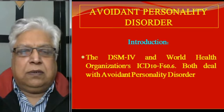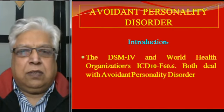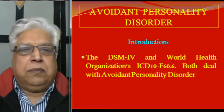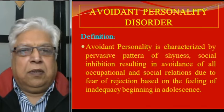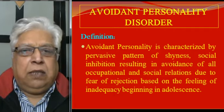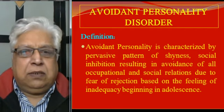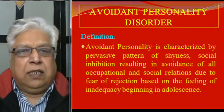Avoidant personality disorder is equally dealt in DSM-IV and World Health Organization's ICD-10 under F60.6. Both of them have almost similar features. Avoidant personality is characterized by a pervasive pattern of shyness, social inhibition, resulting in avoidance of all occupational and social relations due to fear of rejection, which is based on the feeling of inadequacy, and generally it begins in adolescence. Its foundations are laid at the time of adolescence.